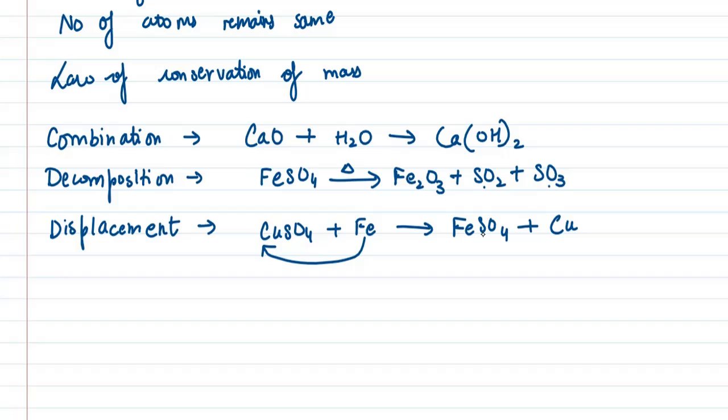Next we have thermal decomposition under decomposition. Thermal means if heat is involved. If there is a reaction in which one element breaks into two parts because of heat. For example, calcium carbonate or CaCO3 when you heat it, you will get calcium oxide and carbon dioxide gas.